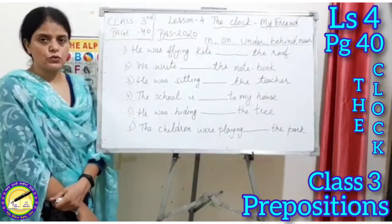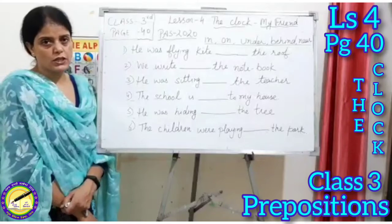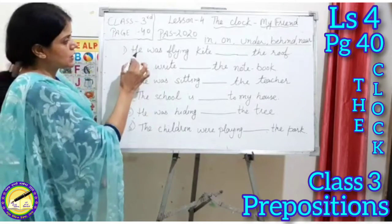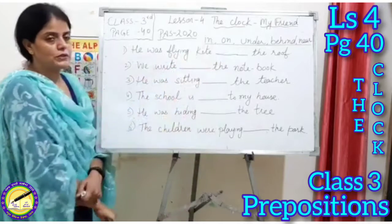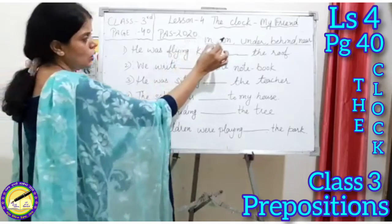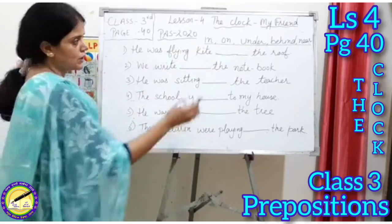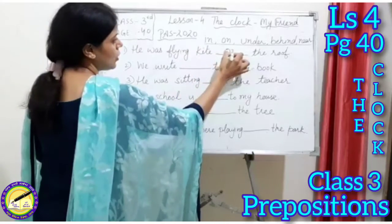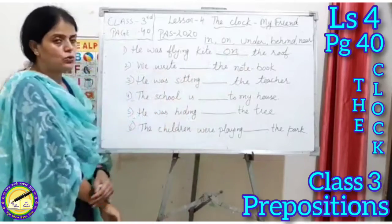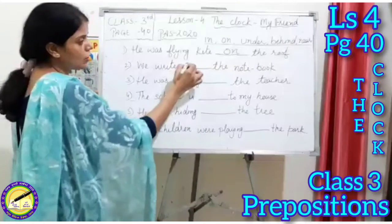So students, here are a few more fill-ups for you with options. The options are given on the top and we have to choose the right option to fill in the blanks. First: he was flying a kite blank the roof. The child was flying the kite above the roof, so we write 'on': he was flying the kite on the roof. Second: we write blank the notebook. We write on top of the notebook, so we write 'on': we write on the notebook.